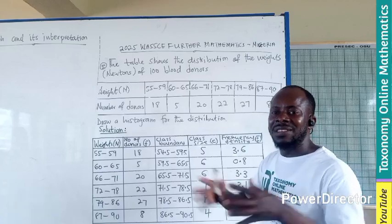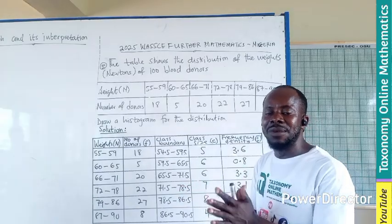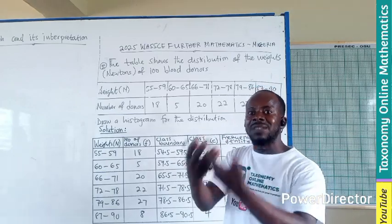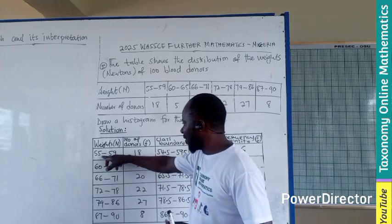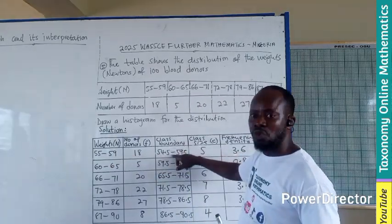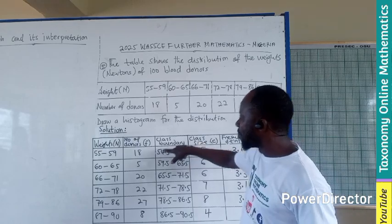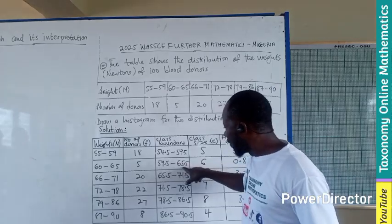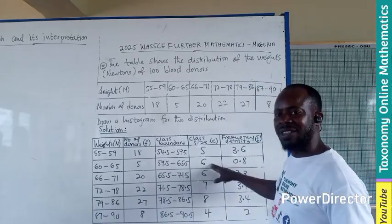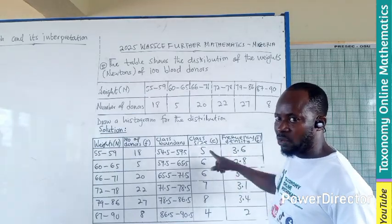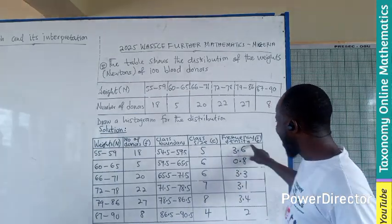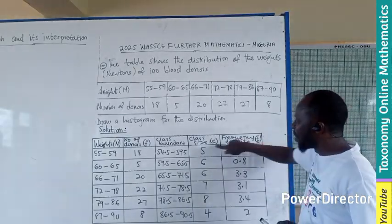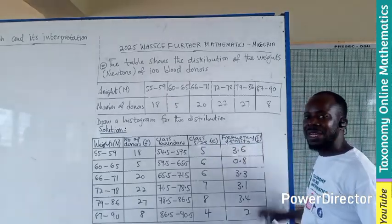Then the next thing is to find the class size. The class size is also the difference between the upper class boundary and the lower class boundary of a particular class interval. So 59.5 minus 54.5 will give you 5. Then 65.5 minus 59.5 also give you 6. So you can see this is not equal. This is why we are going to include the next formula which is frequency density. The frequency divided by the class size gives you the frequency density.